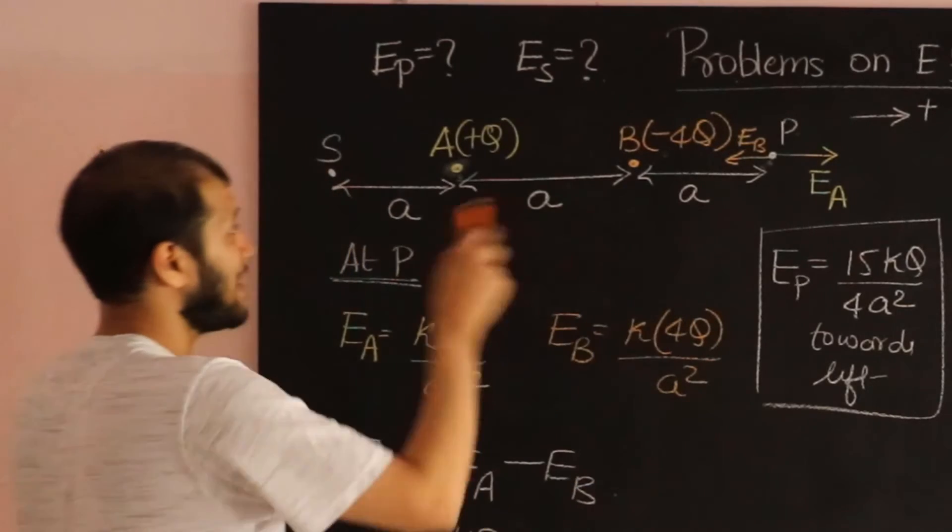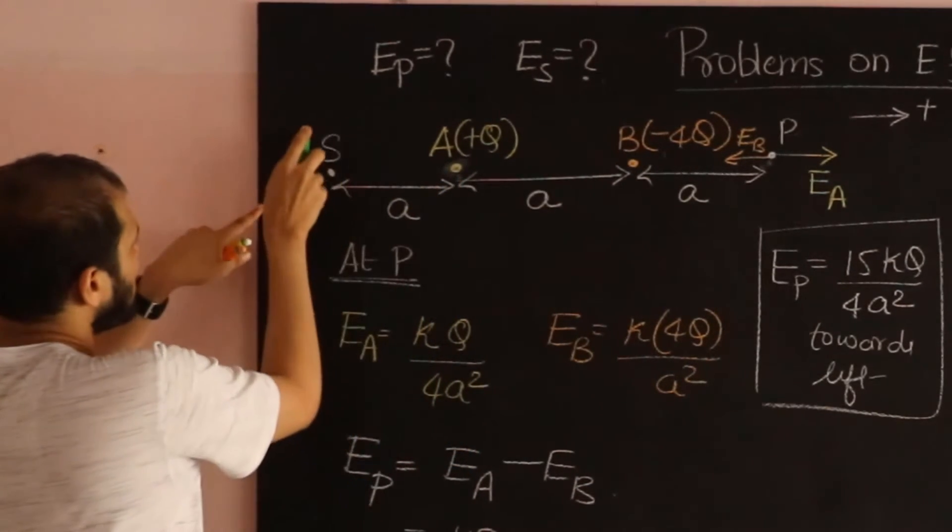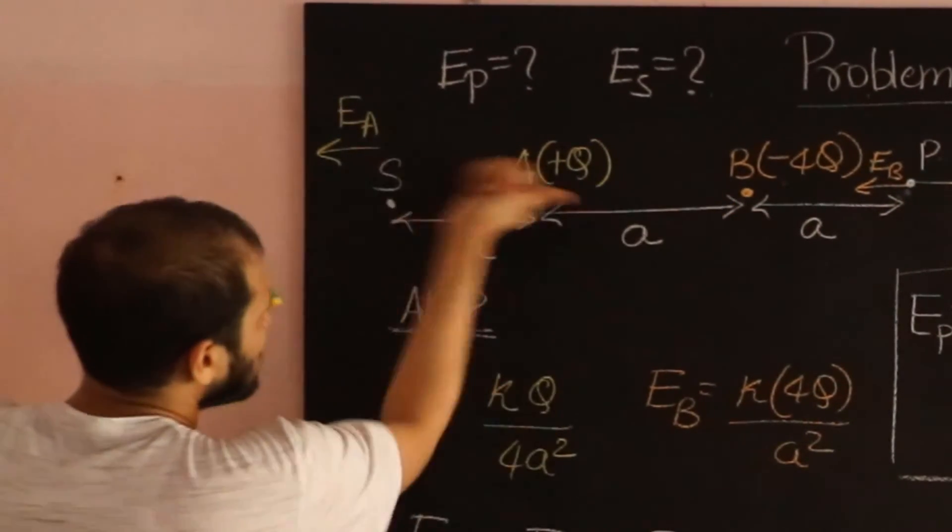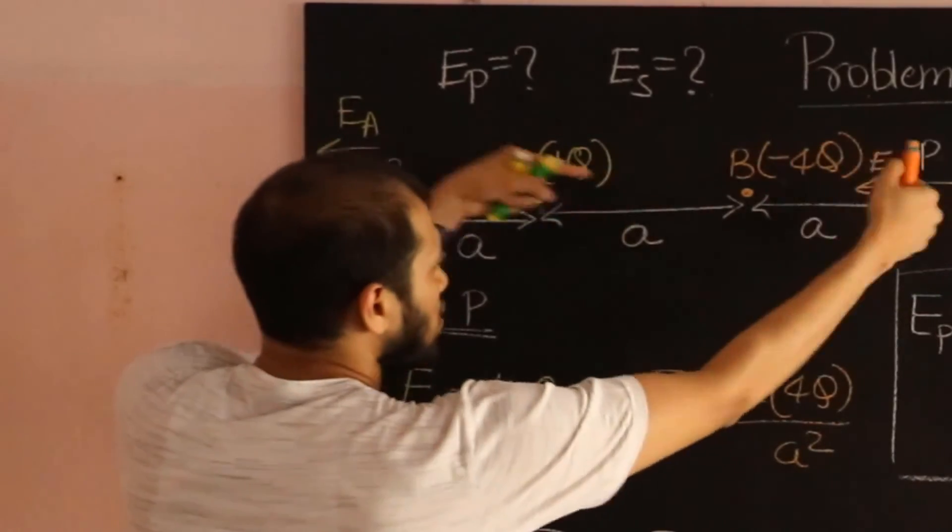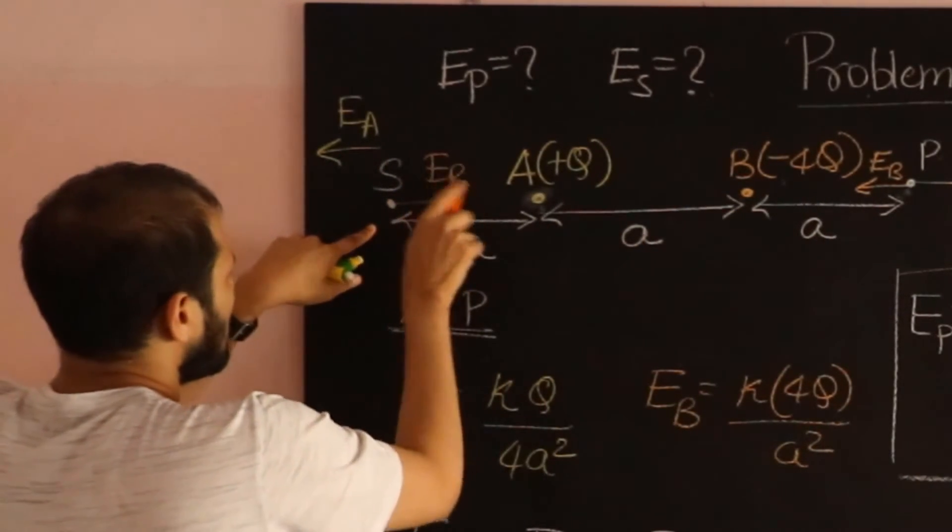Let me do this. So the first step is getting the direction. Charge A is going to put an outward field, and charge B is going to put an inward field. I call this towards as inward, away for as outwards.